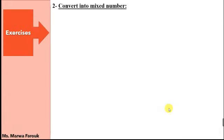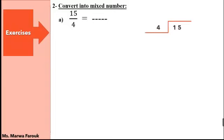Let's see the opposite — converting from an improper fraction to a mixed number. Let's see the first exercise: 15 over 4. We are going to make long division. When we convert from an improper fraction to a mixed number, we make long division. 15 divided by 4 — 15 is not in table 4. So we write down table 4: 1 times 4 is 4, 2 times 4 is 8, 3 times 4 is 12, 4 times 4 is 16. Which one is the closest to 15? It's 3. So we write 3 up and 12 down. Subtract them — it's 3.